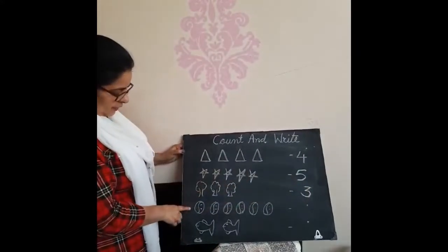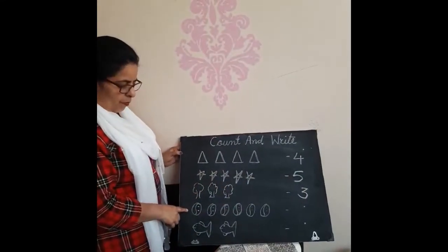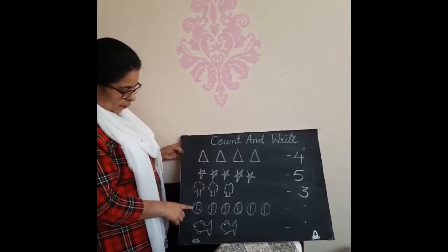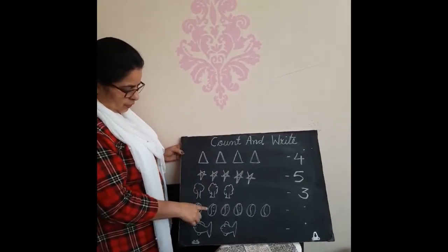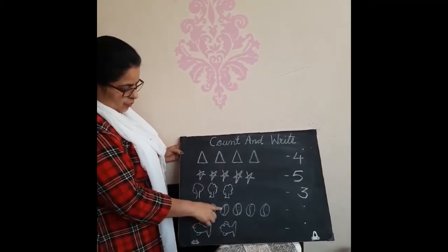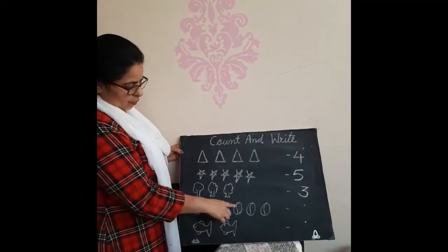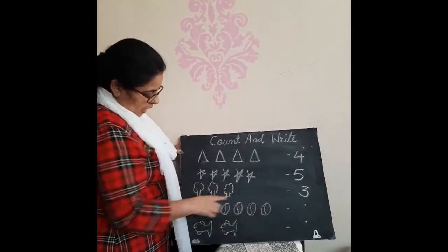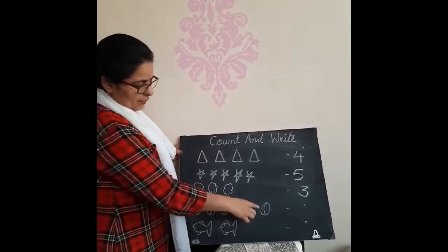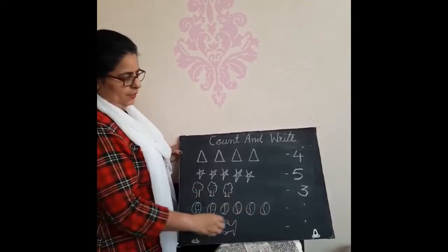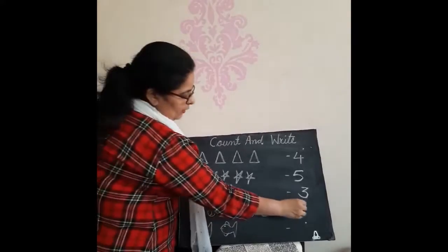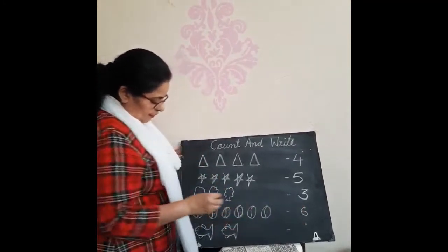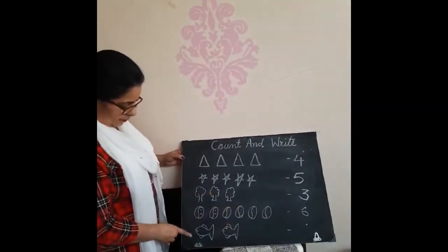Now next picture. Count them. 1, 2, 3, 4, 5, 6. How many balls are here? 6. So write down here. 6. Next picture.